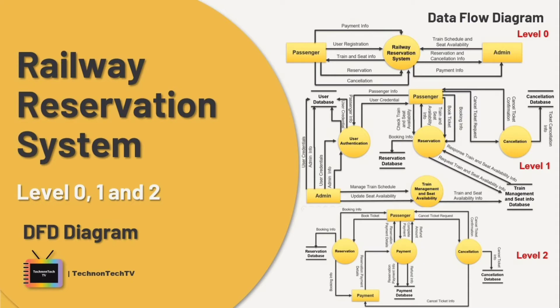The overall railway reservation system is represented and described using input, processing, and output in a DFD. It basically provides information about the inputs and outputs of each process and entity of the railway reservation system, such as passenger, admin, payment gateway, etc.